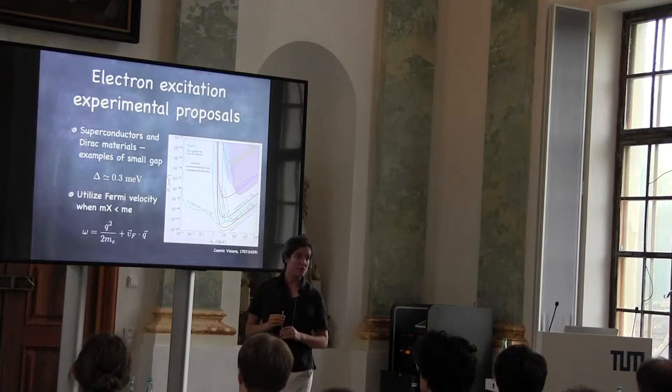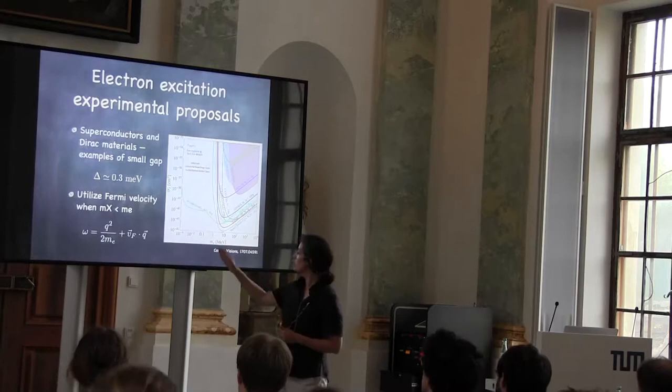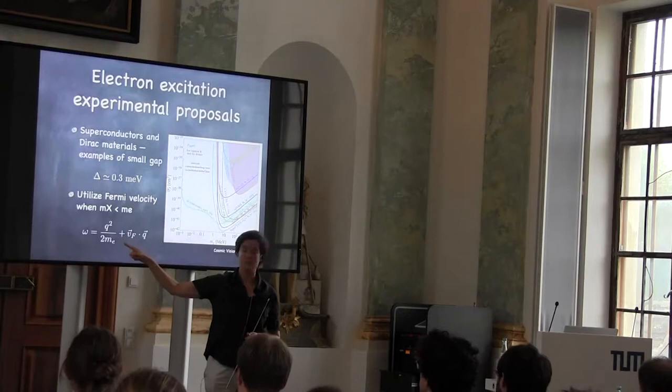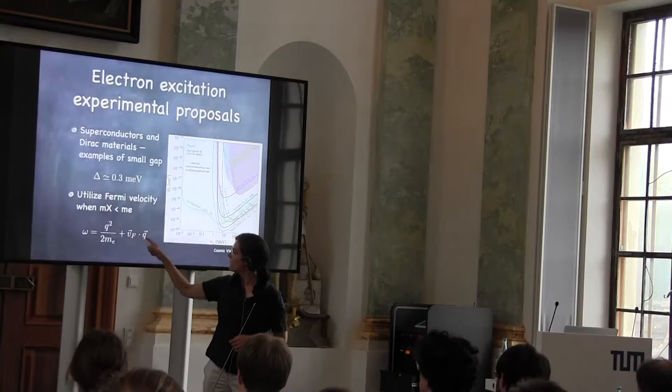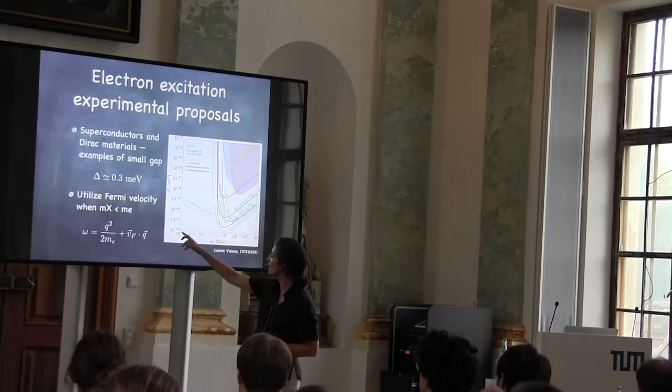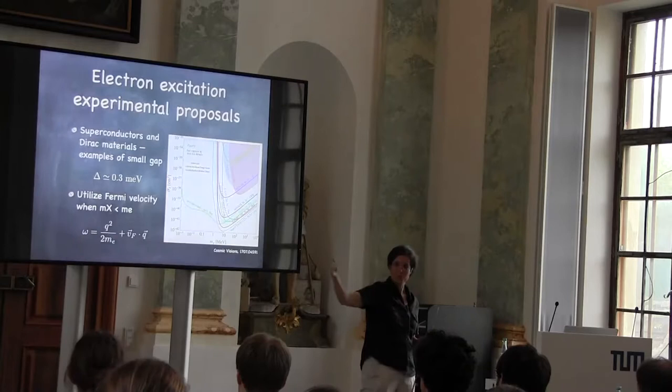There's one trick I didn't mention: once the dark matter mass drops below 1 MeV, you pay a momentum transfer to electron mass suppression. But for electrons in these materials, they're not at rest — they carry a Fermi velocity of about 10^-2 times c. That fact means that even for masses all the way down to a keV, you can actually extract all of the dark matter kinetic energy, because you're not interacting with a target at rest but with electrons moving faster than the dark matter itself.